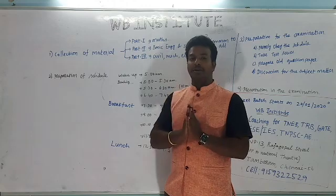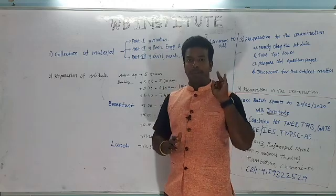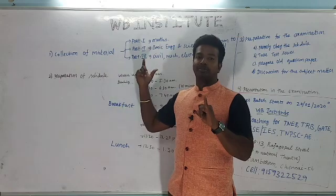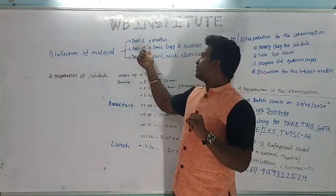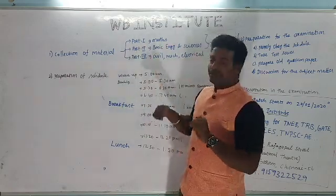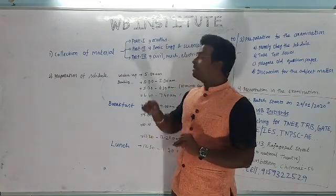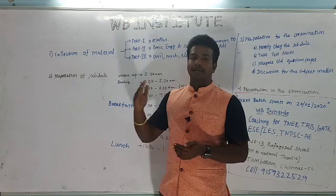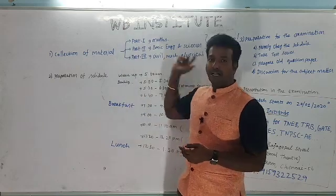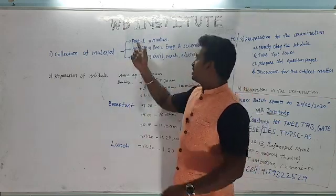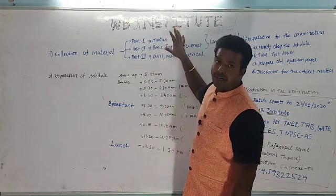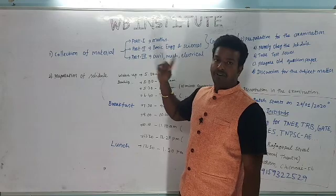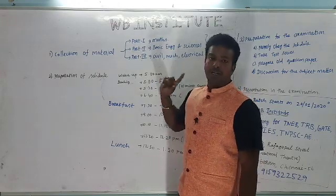How is the question pattern? Part 1, Part 2, Part 3. Part 1 is a max of 20 marks. Part 2 is basic engineering and science, which is 20 marks. It is equal to all branches — Civil, Mechanical, EEE, CE, IT. Parts 1 and 2 are 45 minutes each, and Part 3 is 75 minutes.